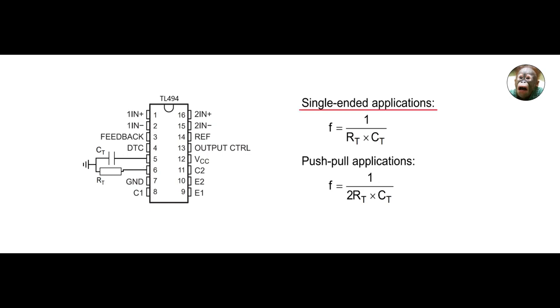Single-ended applications refer to converters where there's usually only one switch, like a buck or boost converter. Push-pull applications refer to where there are two or more switches that are out of phase, like the half bridge or full bridge converters.